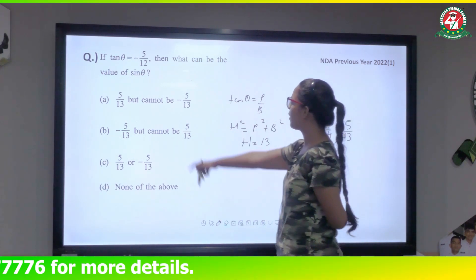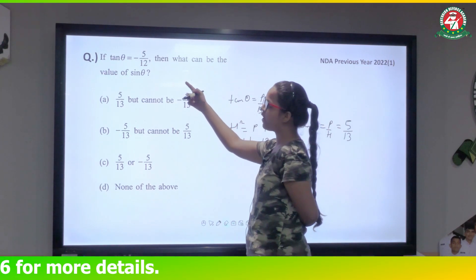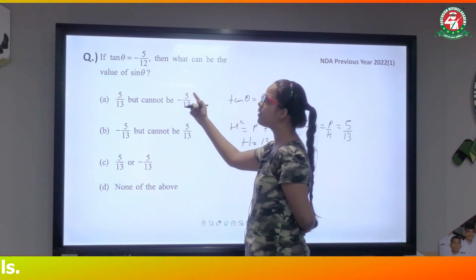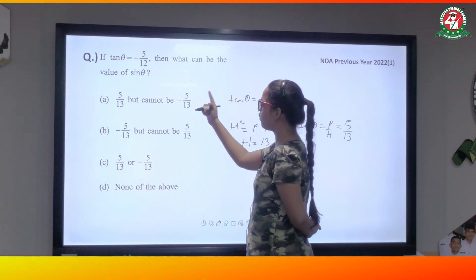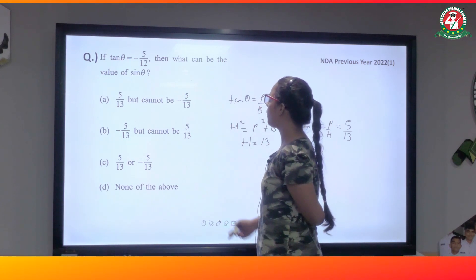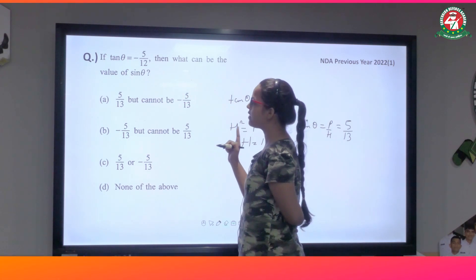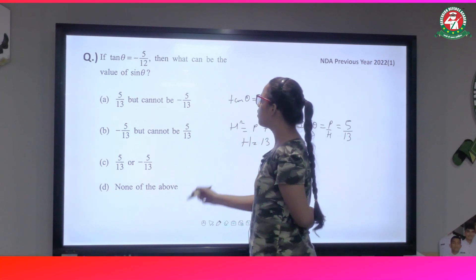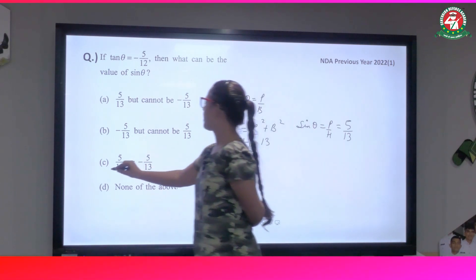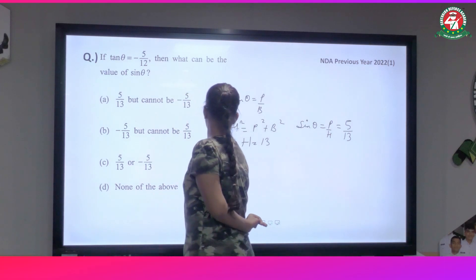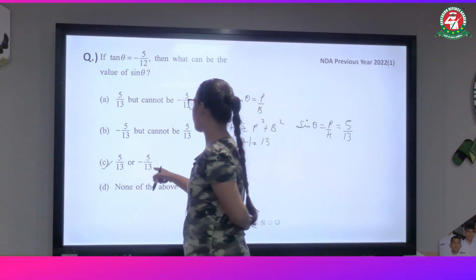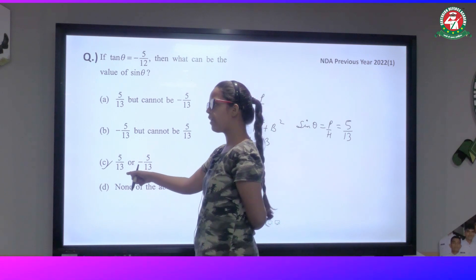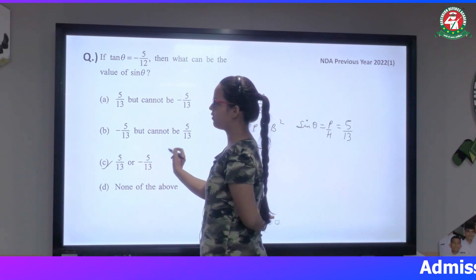We have given that tan θ equals minus 5 by 12, so it is negative. Tan θ is negative in the second and fourth quadrants. Sin θ is positive in the second quadrant and negative in the fourth quadrant. So the possible values are 5/13 in the second quadrant and minus 5/13 in the fourth quadrant.